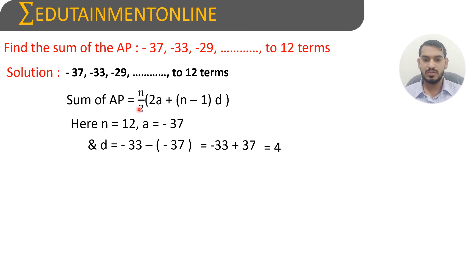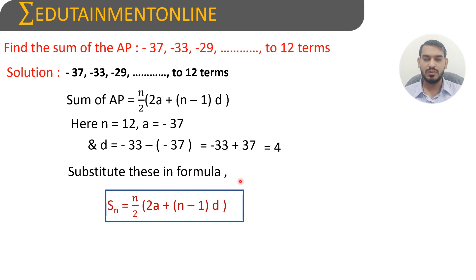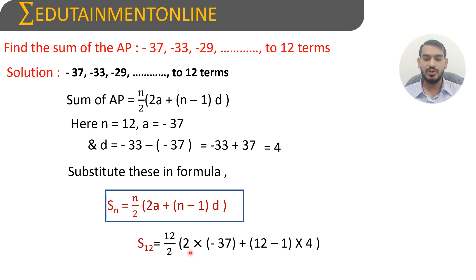We substitute into the formula: Sn = n/2 × (2a + (n-1)d). With n = 12, a = -37, and d = 4, we get S12 = 12/2 × (2×(-37) + (12-1)×4).